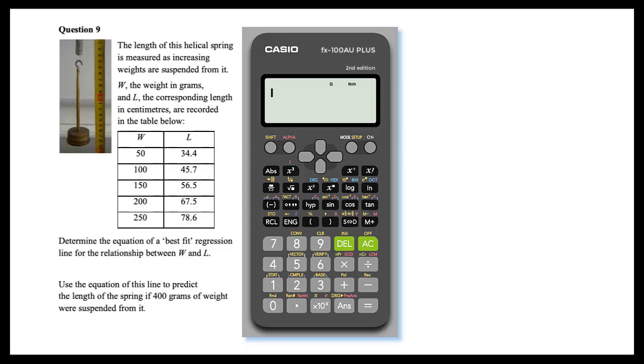Using a Casio FX82AU plus 2 or Casio FX100AU+, the equation of a best fit regression line can be determined. To do so,